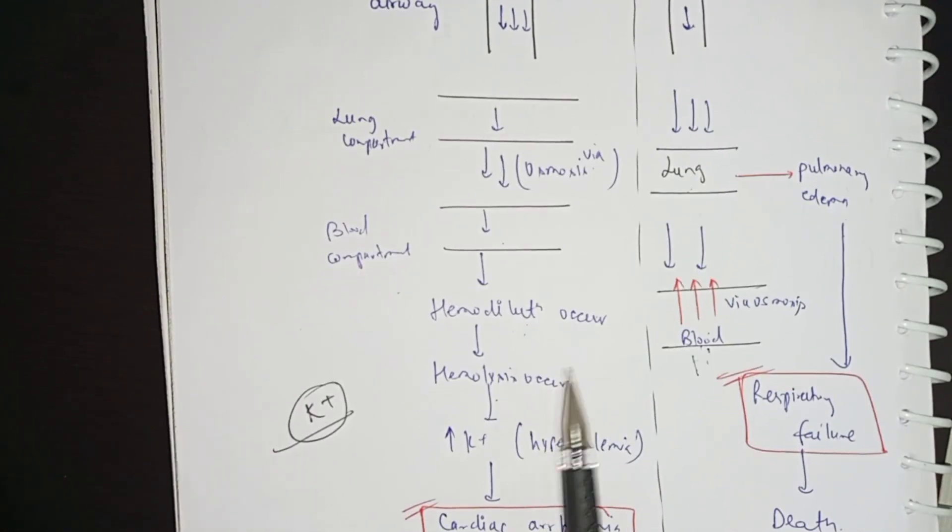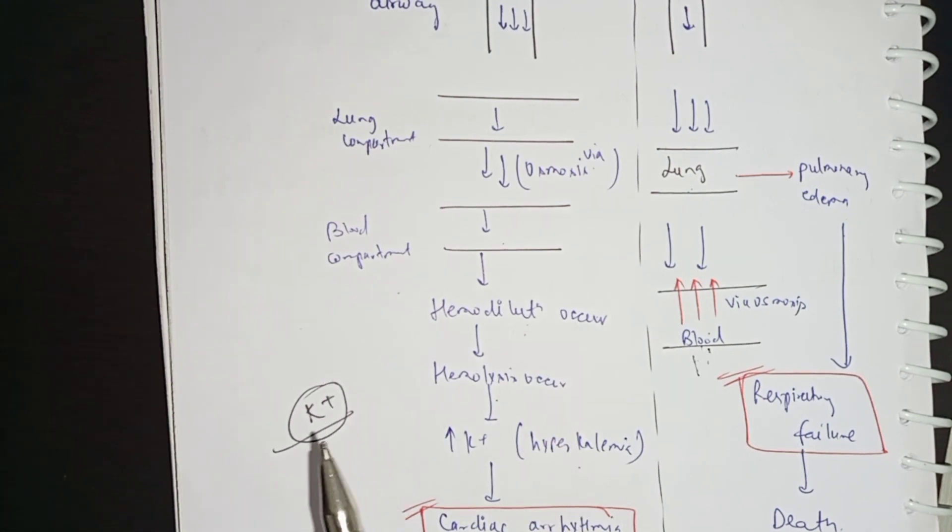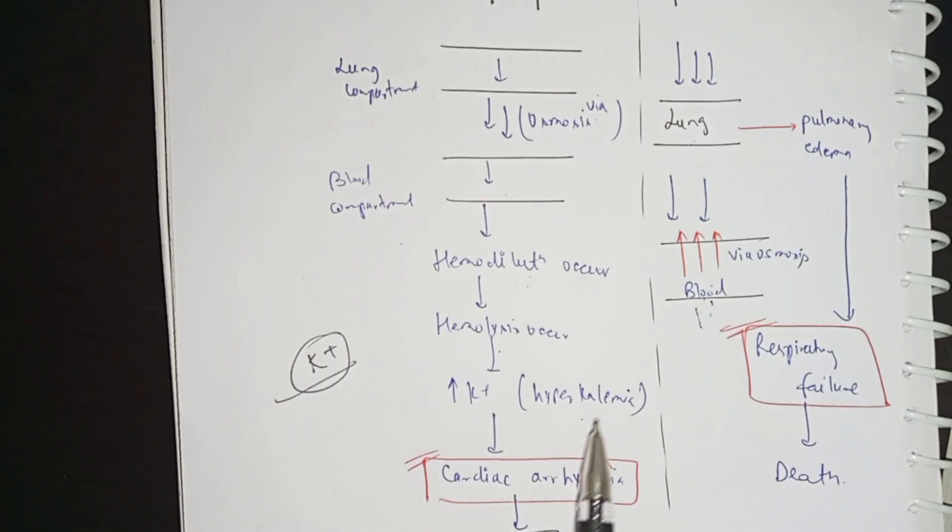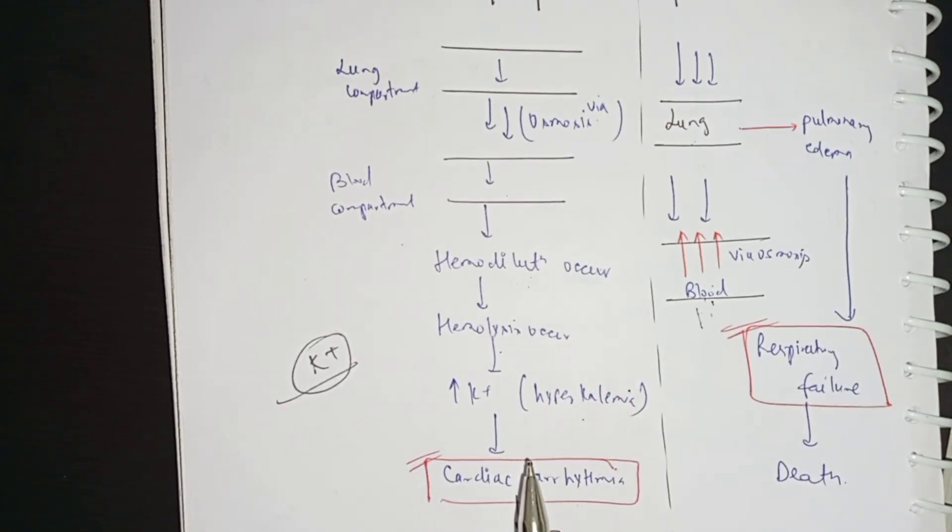We know that RBC or any cell is rich in potassium intracellularly. So when RBC destruction happens, what will happen in the plasma? Hyperkalemia condition.